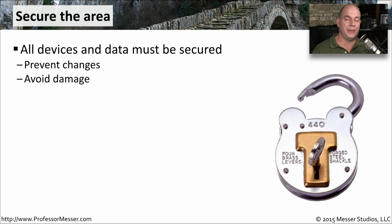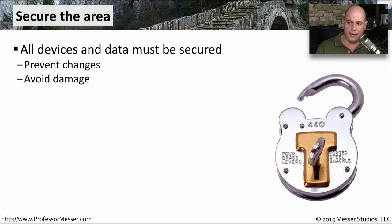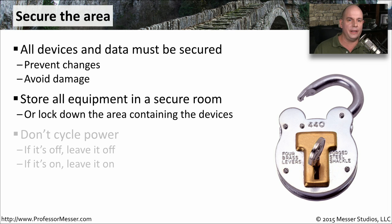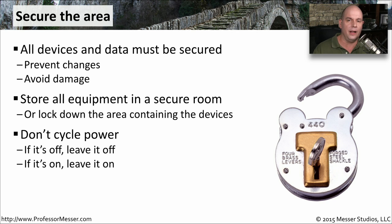When you're working with data associated with an incident, you need to make sure all of that data remains safe. Everything has to be secured. You want to prevent any changes to this information, and you want to prevent anything from damaging important evidence that might be on these devices. Everything should be stored in a secure room. You want to lock down the area that might have these devices inside of it so that you can tightly control who has access. You don't want to even change the power settings if at all possible. If the device is turned on, you leave it on. If the device is turned off, you leave it off.